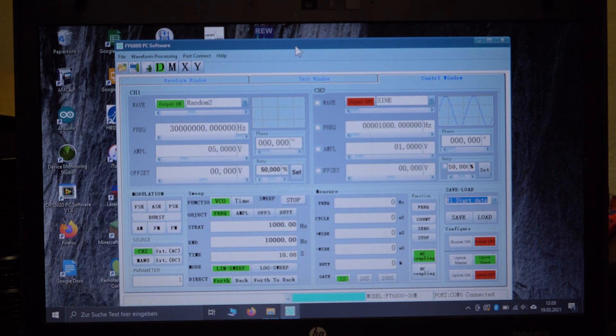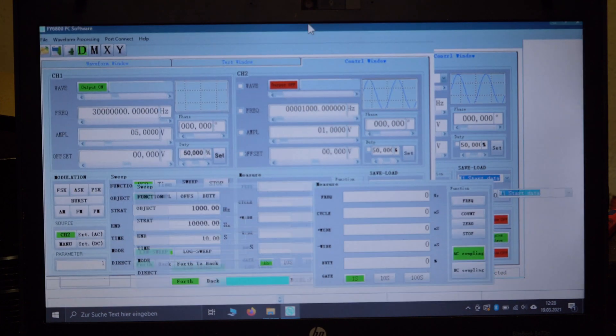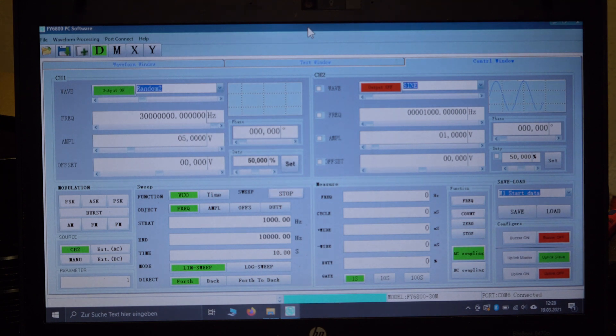You can find it on Google, just search for FY 6800 software - first result. The 6900 software should work as well but I'm not sure about that. Yeah so it's connected, it shows it's the 30 megahertz model, it's all fine.